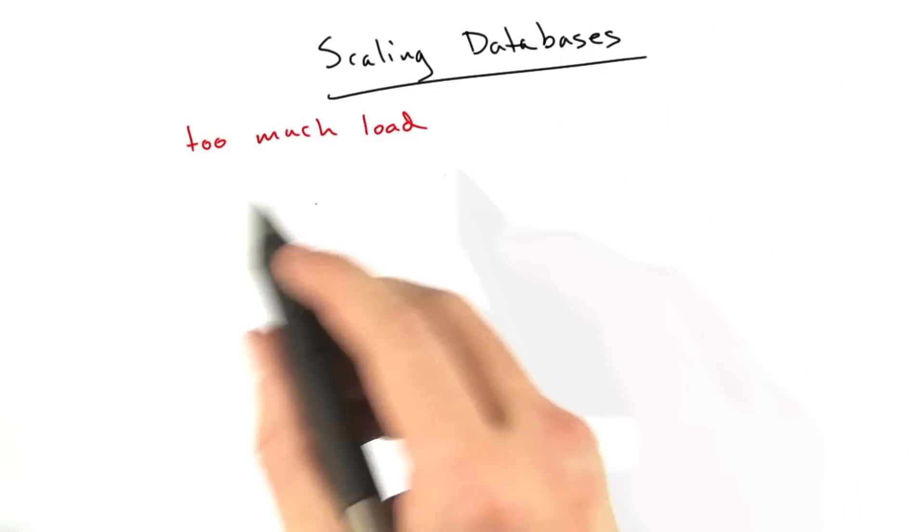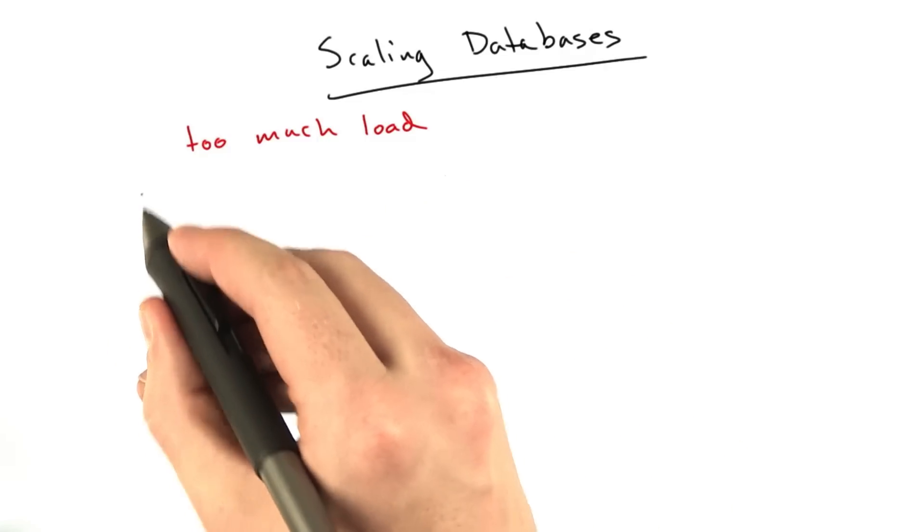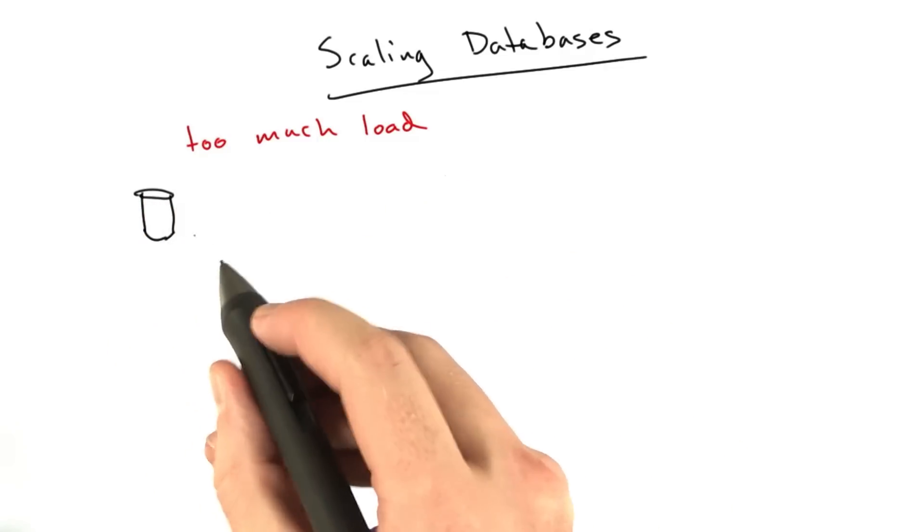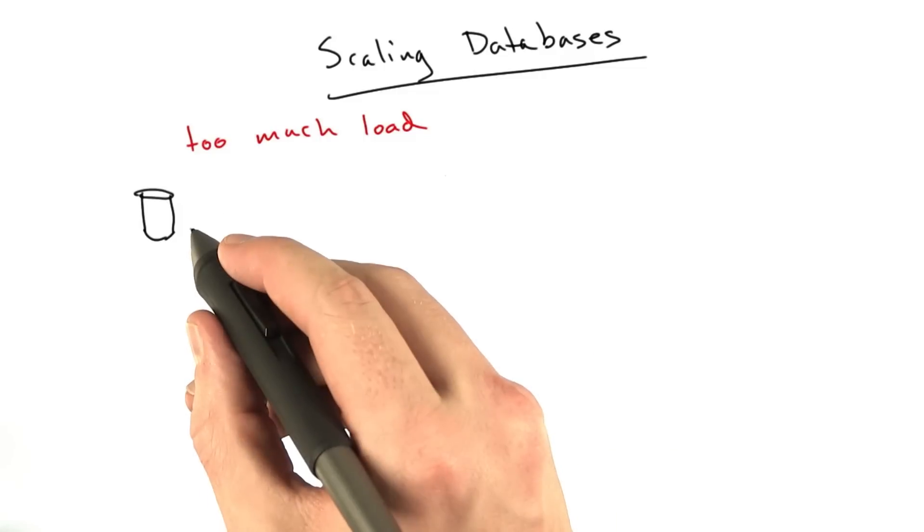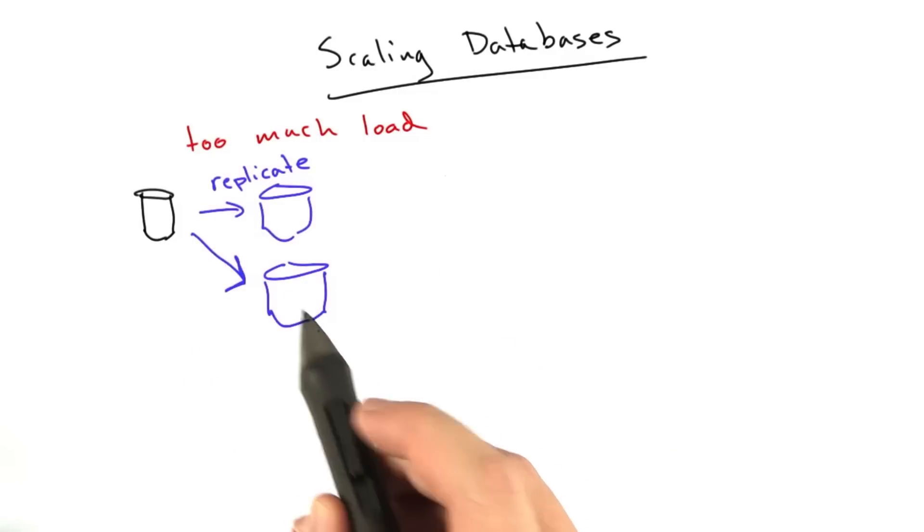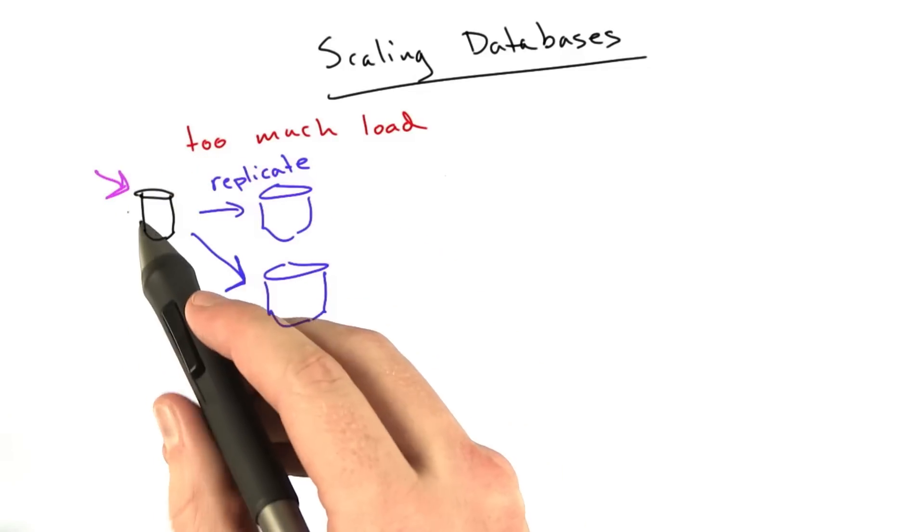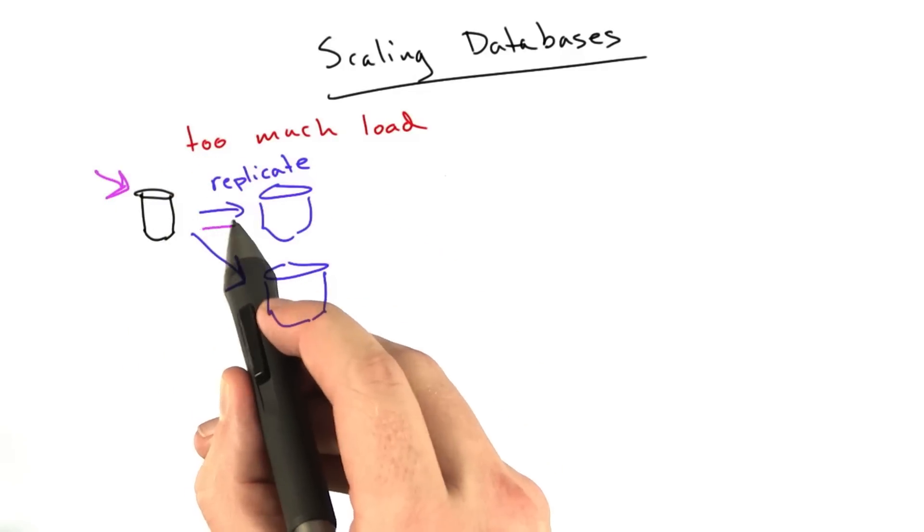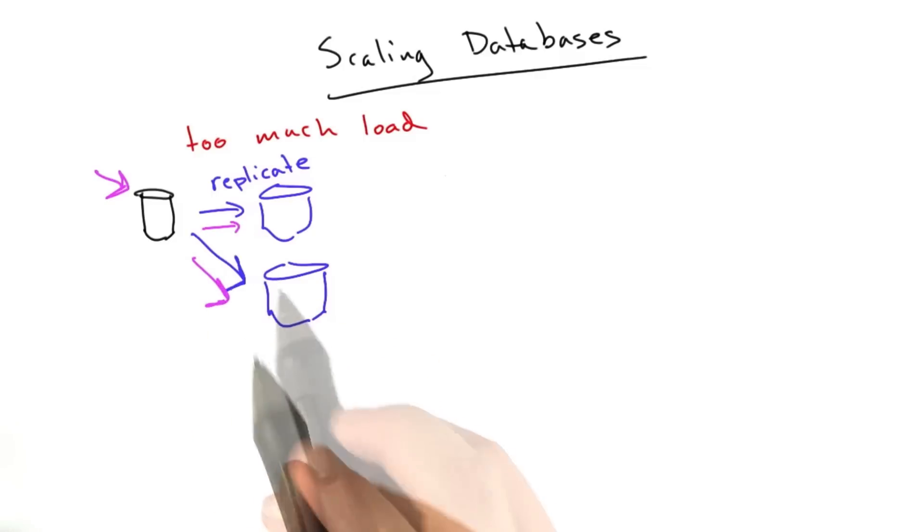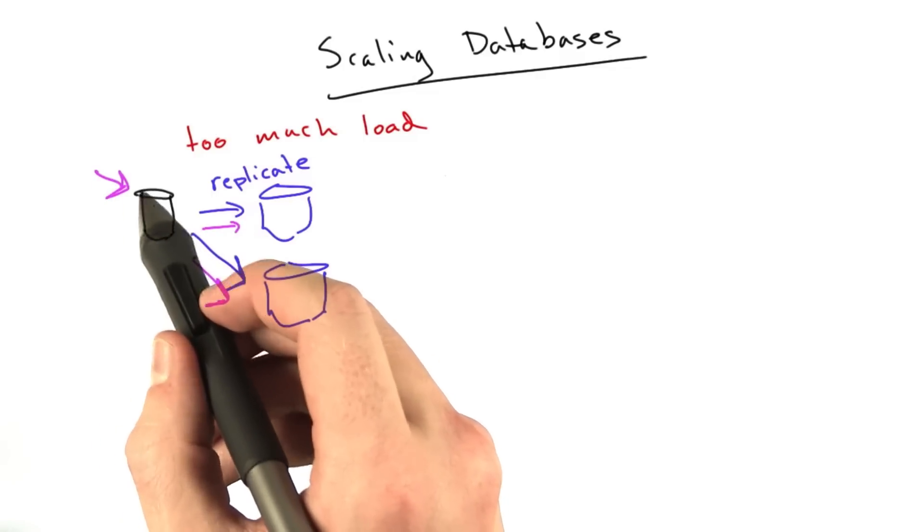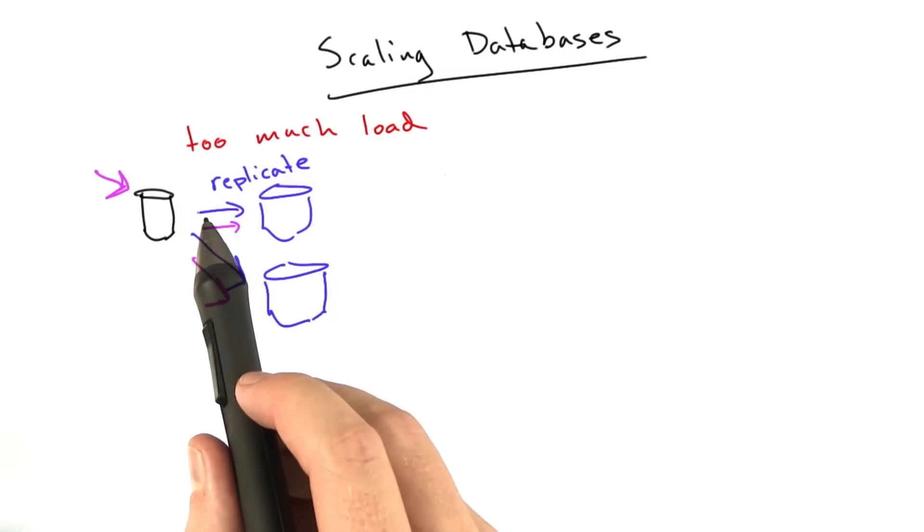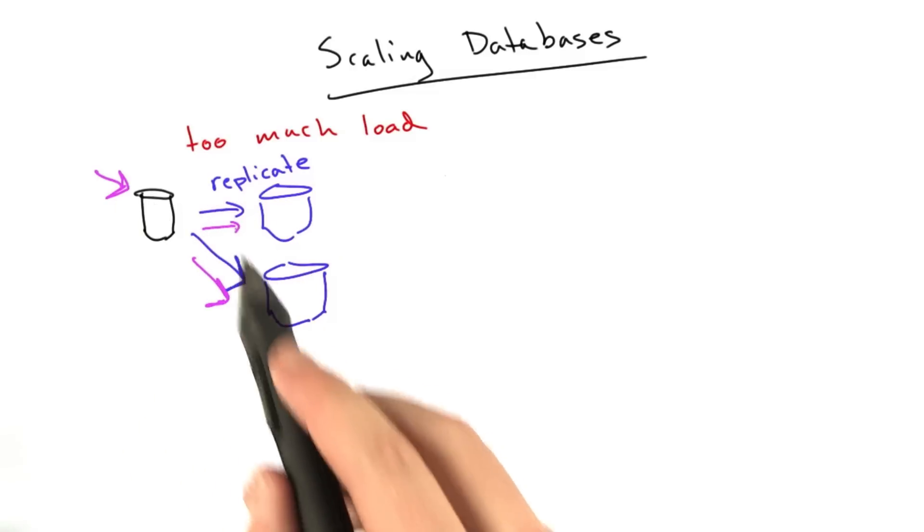You've got this one machine that's got your data on it and it just can't keep up with all of the work. So what you might do in this case is take your database, which are often represented as little cylinders, and replicate it to other databases.